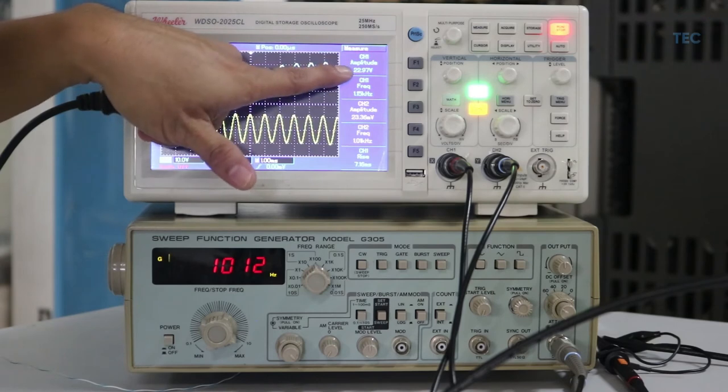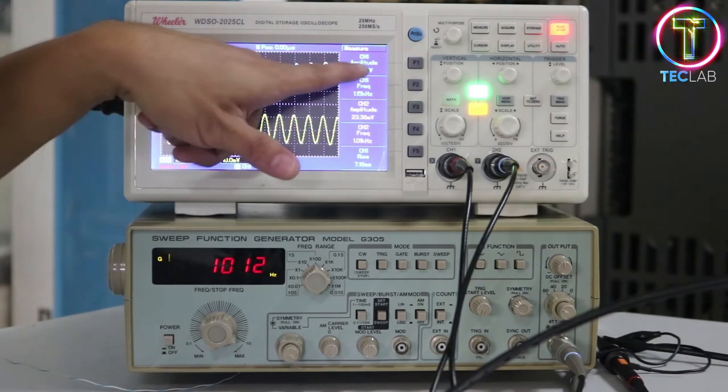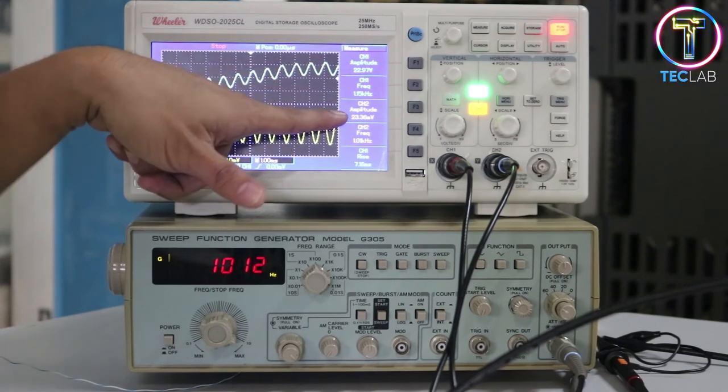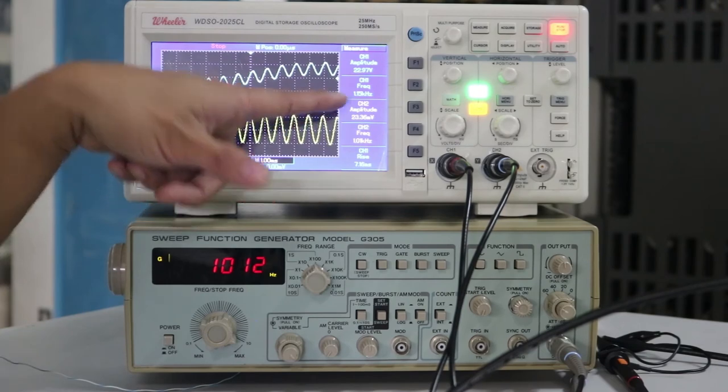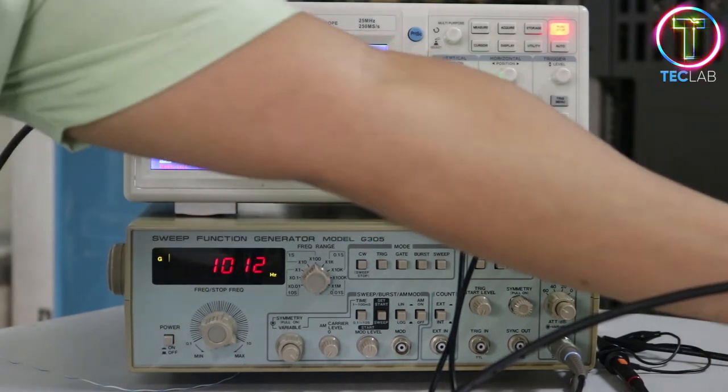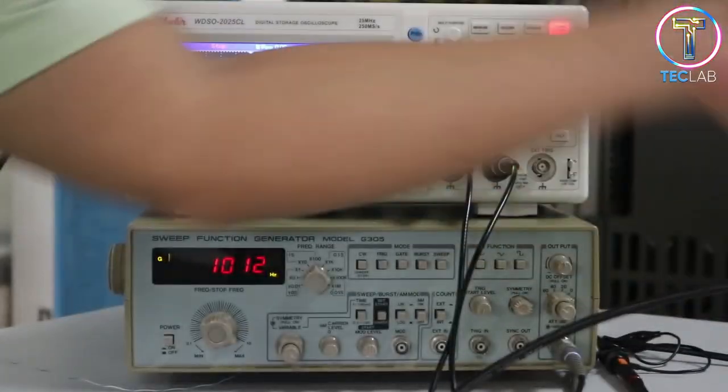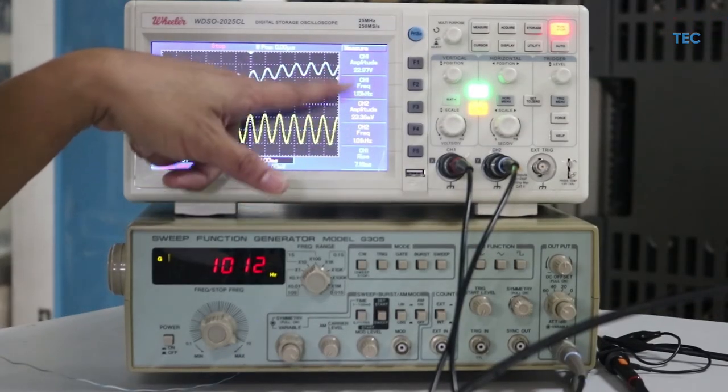On the first channel, you have 22.97 volts of signal or nanovoltage, and here you only have 23.36 millivolts. This is with respect to your ground connection. And at least you have the same frequency.